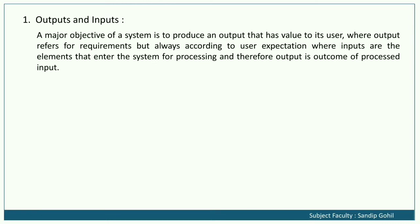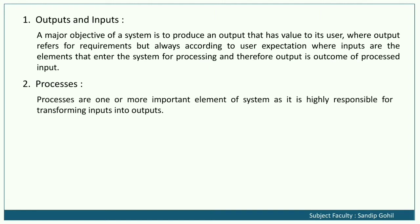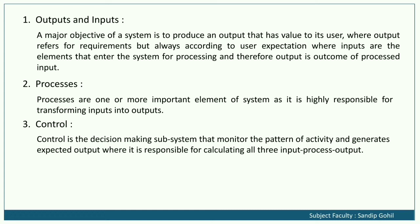Processing: The output is the outcome of processed input. A processor takes input, works on it, and converts it into output. Control: Control is a decision-making subsystem that monitors the pattern of activity and generates expected output. It is responsible for overseeing all three — inputs, processes, and outputs.